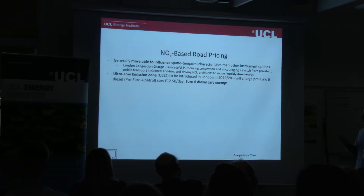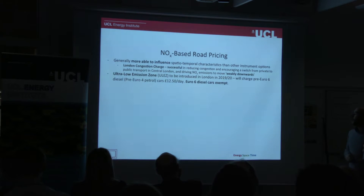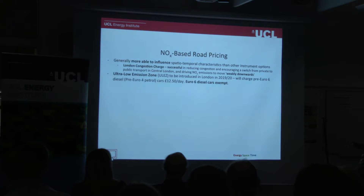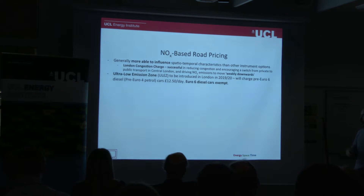The ultra-low emission zone will be introduced in London in 2019 or 2020. That will charge pre-Euro 6 diesel vehicles and pre-Euro 4 petrol cars — both at 80 milligrams of NOx per kilometre — £12.50 a day to enter the zone. The zone will be either the same as the current congestion charge zone or will extend to the north and south circulars depending on the final design. The key point here is that Euro 6 diesel cars are exempt from the charge.